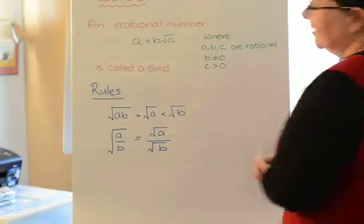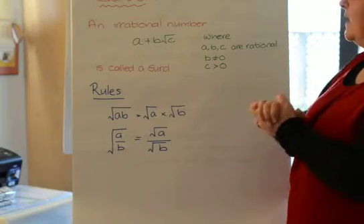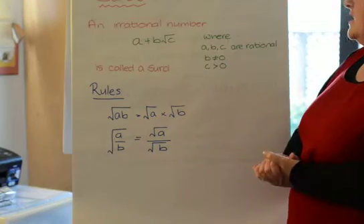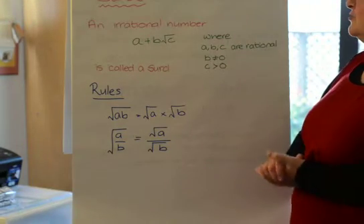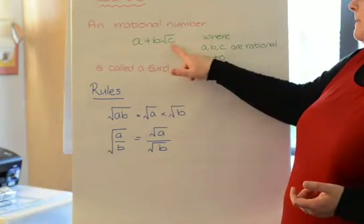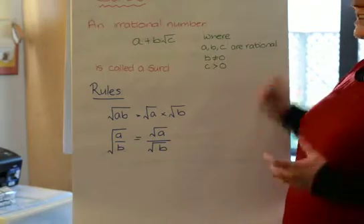Okay, so this is the last part, pretty much, of the algebra section of complex numbers, and we're going to talk about surds. So basically, an irrational number can be written like this: a plus b times root c, where a, b, c are rational numbers.